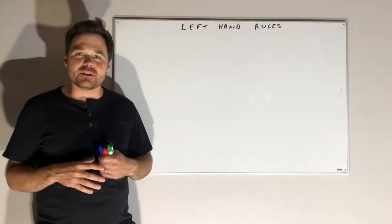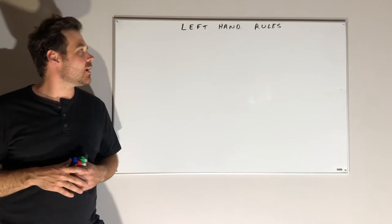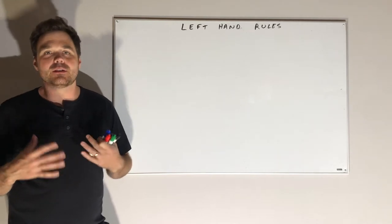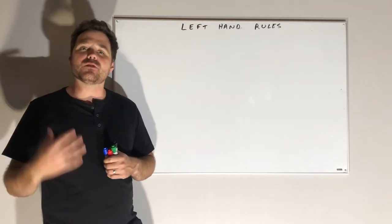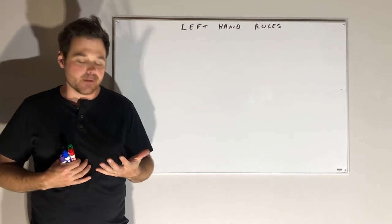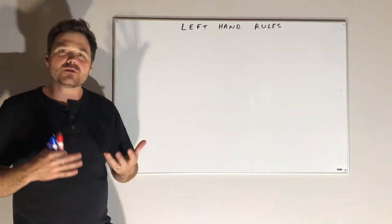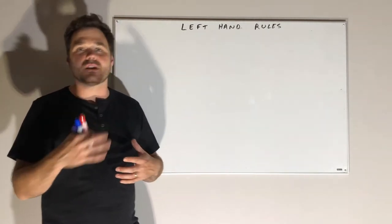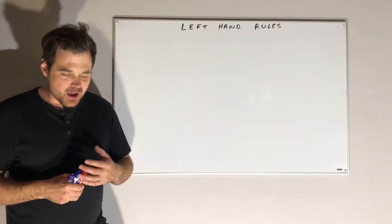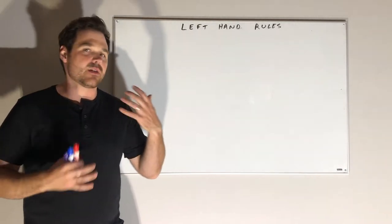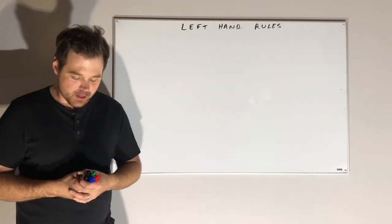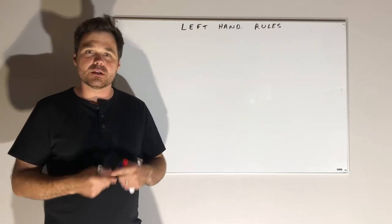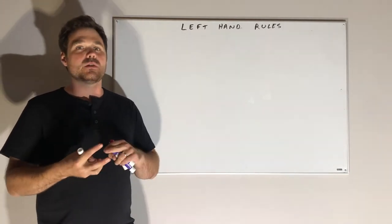Hi, welcome to a special edition COVID-19 recording. Trying something a little bit different today. What I want to talk about today is some left-hand rules that we use when we're talking about electrical theory. We're going to use our left hand to describe some relationships between current flow, magnetic fields, conductors, generators, coils, and things like that. I want to talk about three different left-hand rules: one for conductors, one for coils, and one for generation.